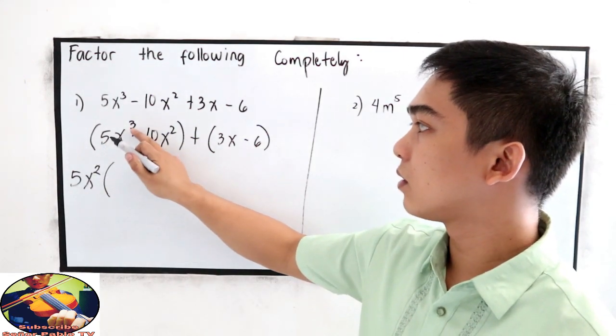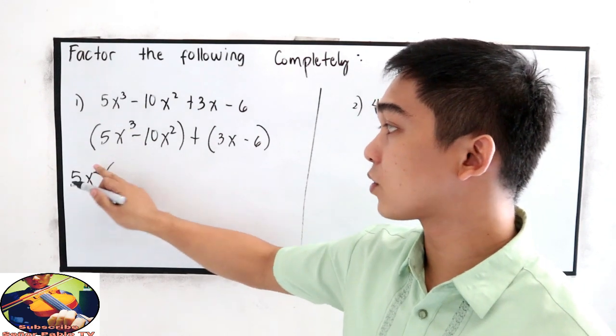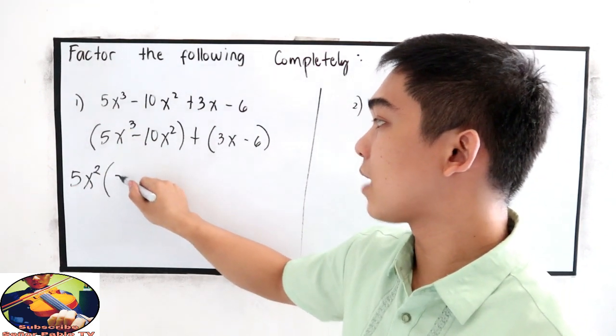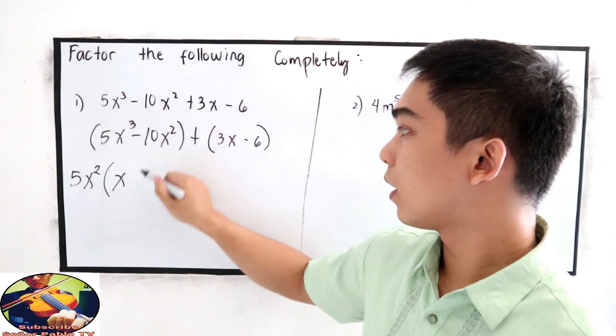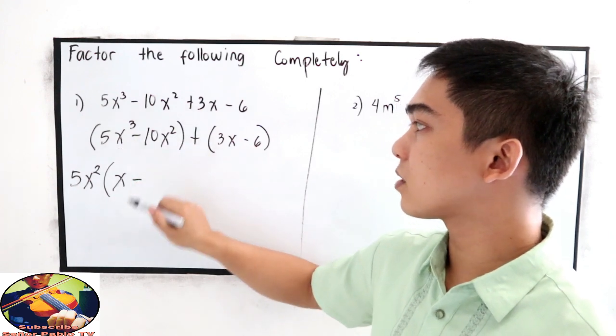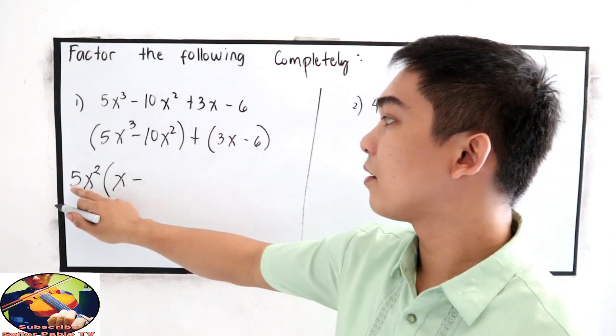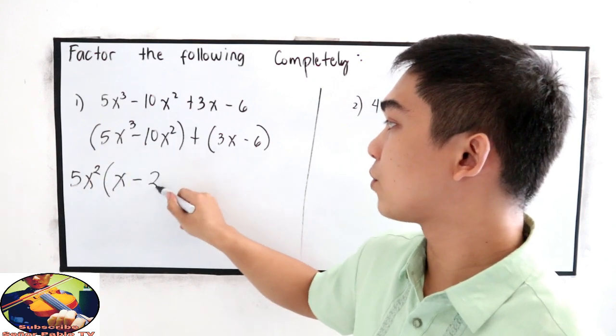That is simply x. Copy the sign minus 10x squared divided by 5x squared. That is 2.